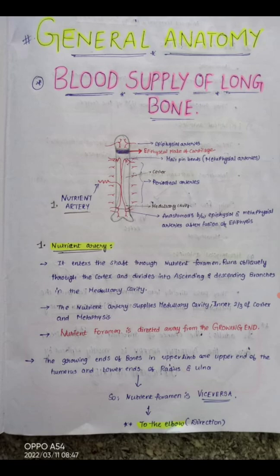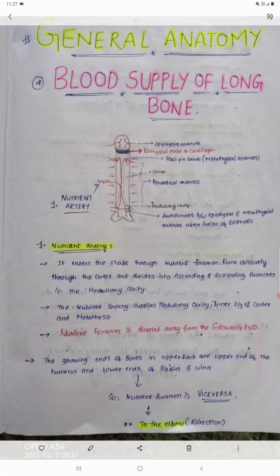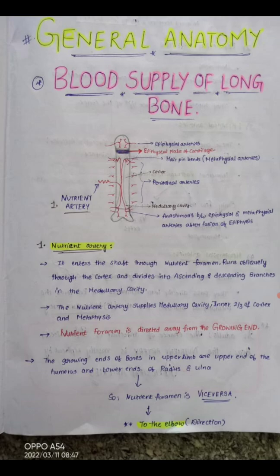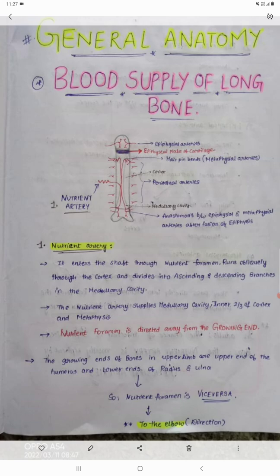The nutrient artery enters the shaft through the nutrient foramen, runs obliquely through the cortex, and divides into ascending and descending branches while entering the medullary cavity. You can see the cortex and the medullary cavity in the diagram, which has been labeled. In the medullary cavity, two branches are divided: one is the ascending branch and another is the descending branch.